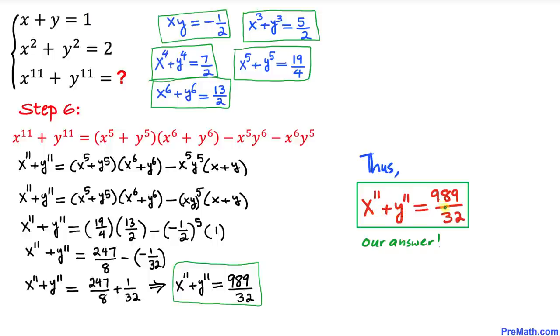So our x¹¹ plus y¹¹ value turns out to be 989 divided by 32. Thanks for watching, and please don't forget to subscribe to my channel for more exciting videos.